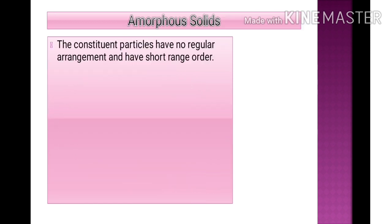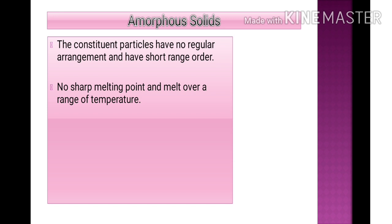In amorphous solids, the constituent particles have no regular arrangement. Their arrangement varies only up to short distances, known as short range order. There is no sharp melting point; they melt over a range of temperature. For example, glass does not melt at a sharp temperature.